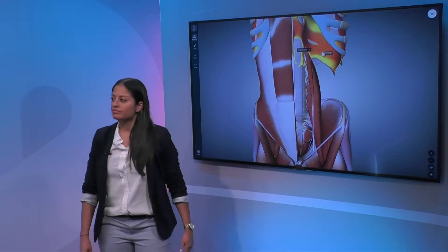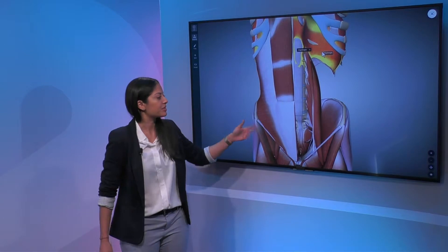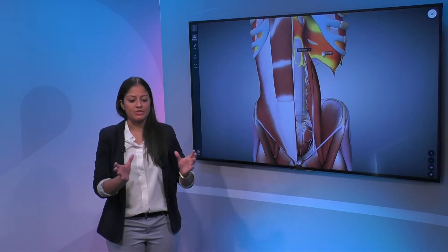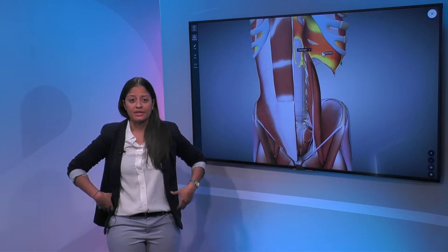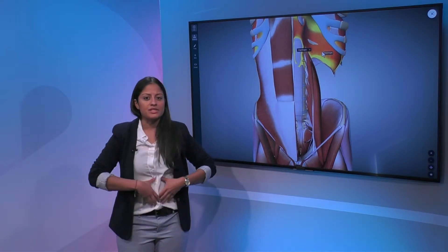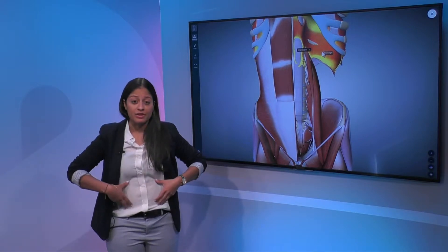So now how important are these strong core muscles for our back? Super important. Basically the core is a 360 degree muscular stabilization for the back. You have your rectus abdominis and your transverse abdominis in the front.